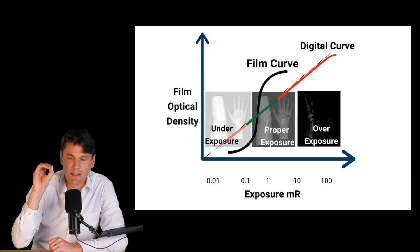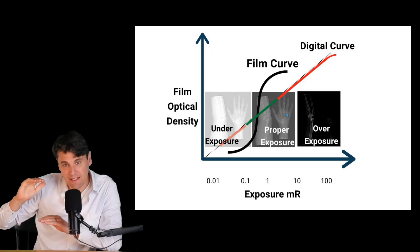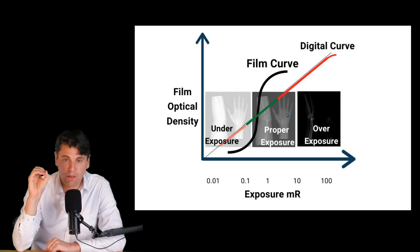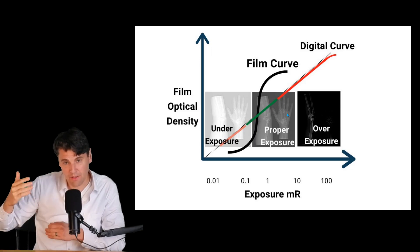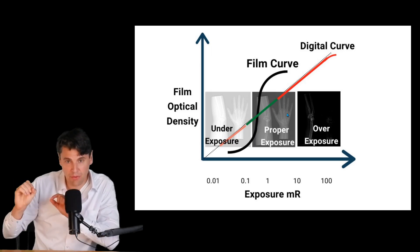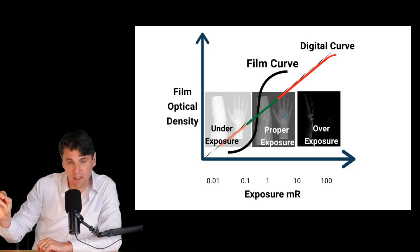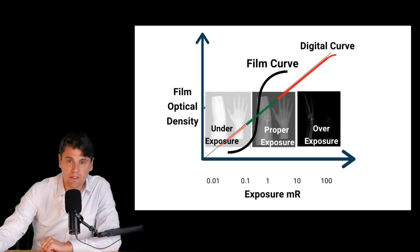In the middle here, you get the Goldilocks region where you actually can see differences between the different types of tissue in your exposure. This is because those different areas on the film are being treated in a linear manner — places seeing more exposure can be differentiated from places seeing less exposure. But on these two sides, this is what's called saturation.